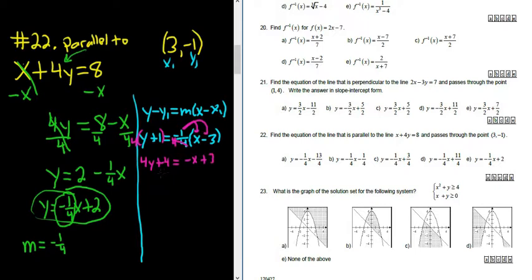Almost there. Now we can subtract 4 from both sides. So we get 4y equals negative x minus 1. And to finish, you just divide by 4. You get y equals negative 1 fourth x minus 1 fourth.